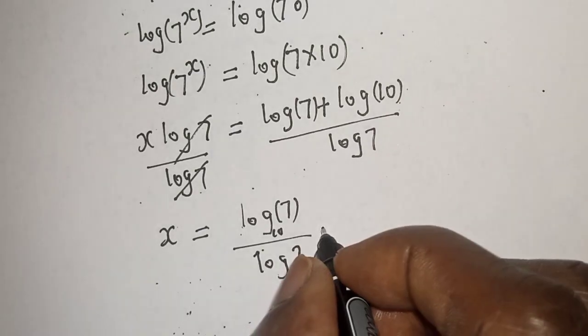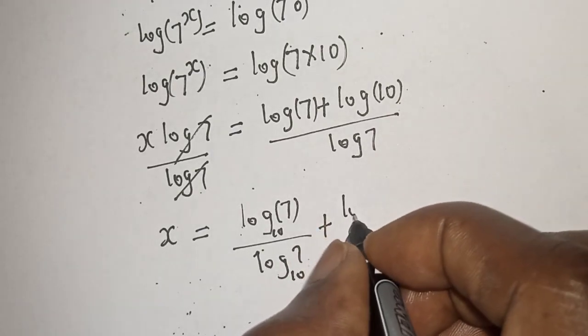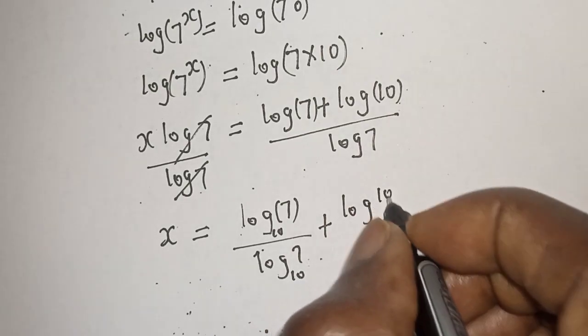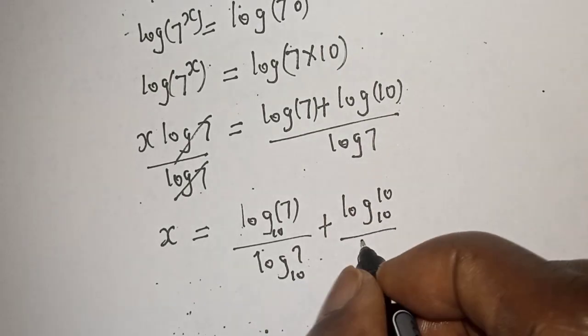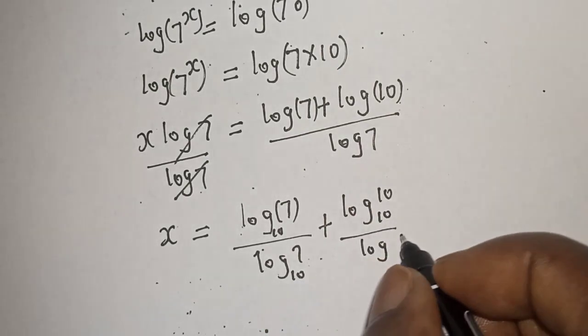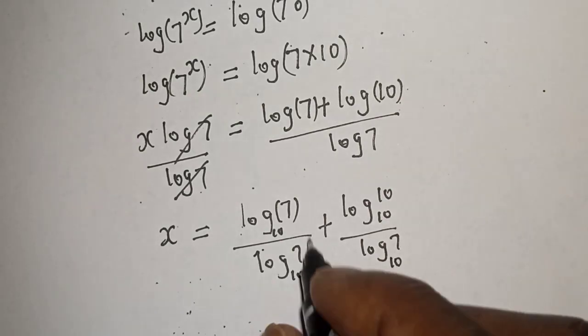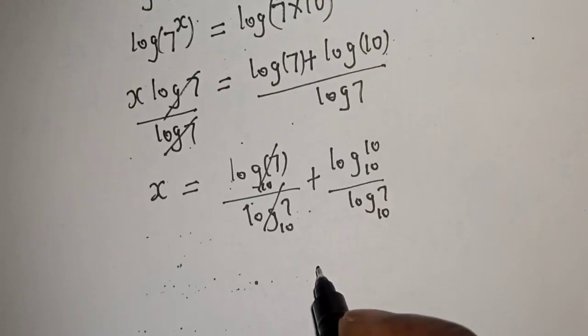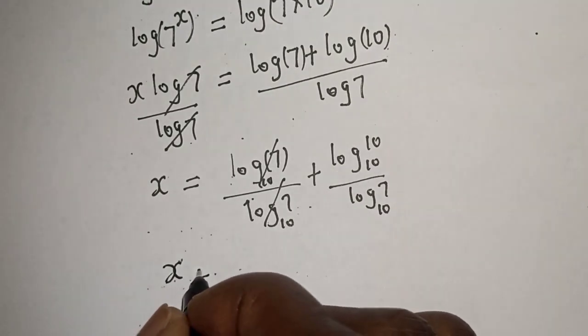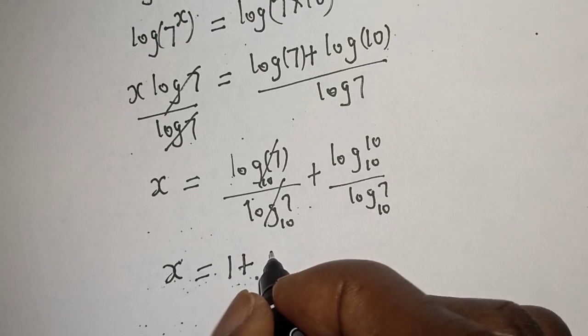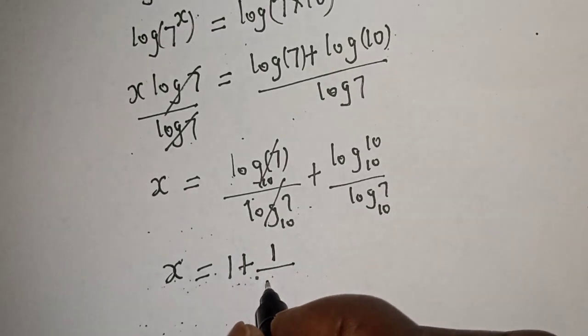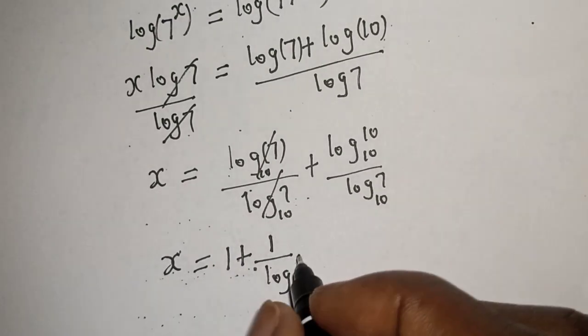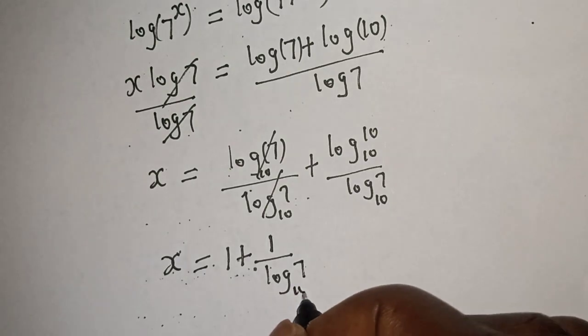Plus log 10 base 10 over log seven base 10. This will cancel, that is one. Log 10 base 10 is one. Then x is equal to one plus one over log seven base 10.